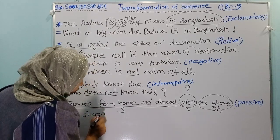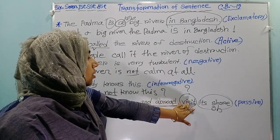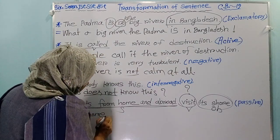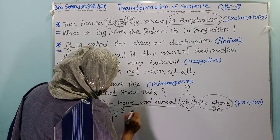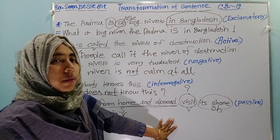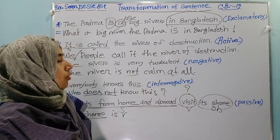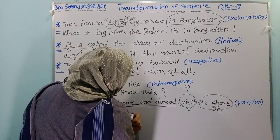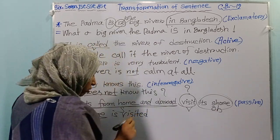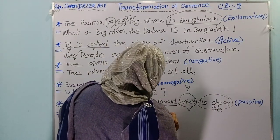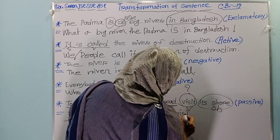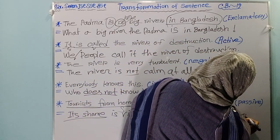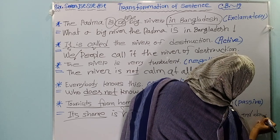For voice change, use your object. 'It is sold' — this is present indefinite tense and singular, so 'it is.' For passive voice, you give the past participle form of the verb. 'It is visited by the tourist from home and abroad.'